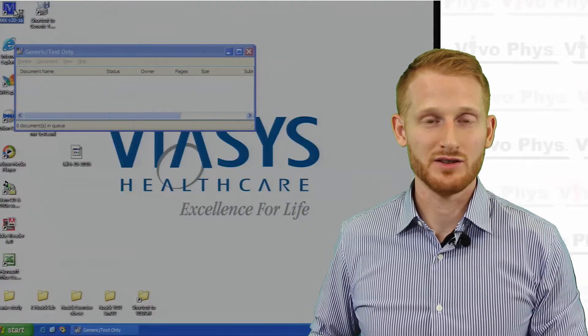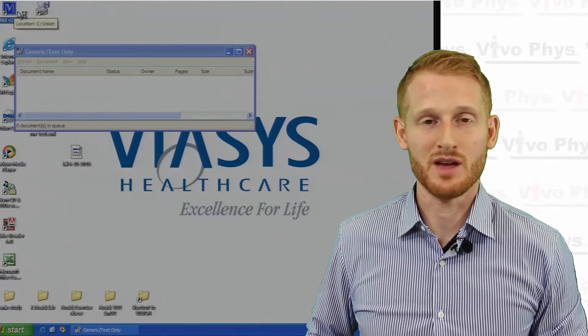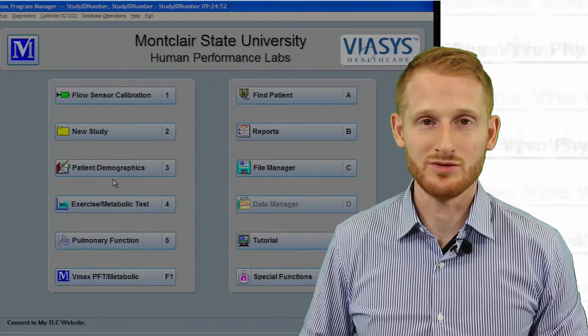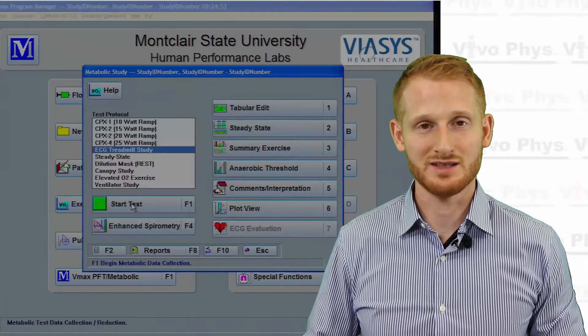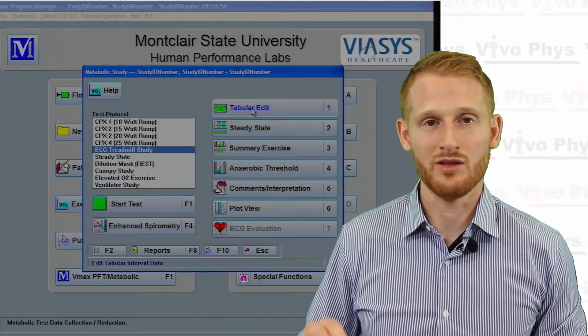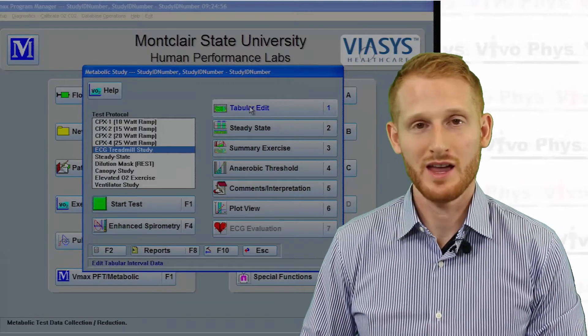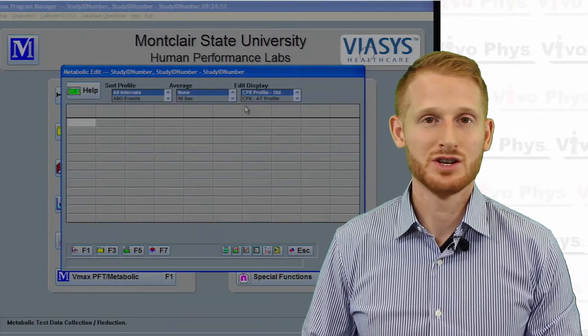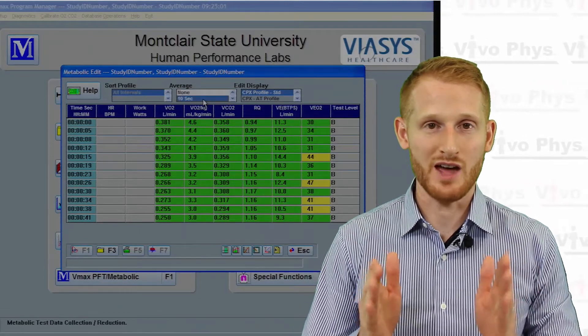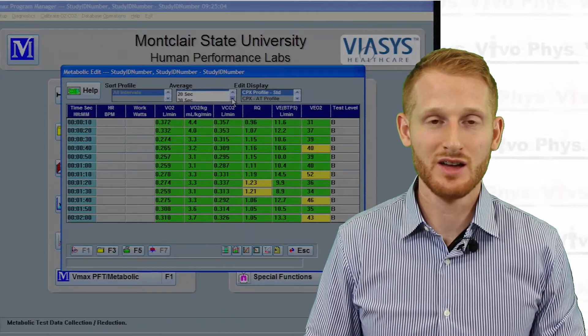Once the text file is chosen as the default printer, go back into the metabolic cart software, go back into the exercise and metabolic tests button within that software, and click on the button that says tabular data or tabular edit. Within that, you can then change whatever the default is for how much time to average per line in your text file.